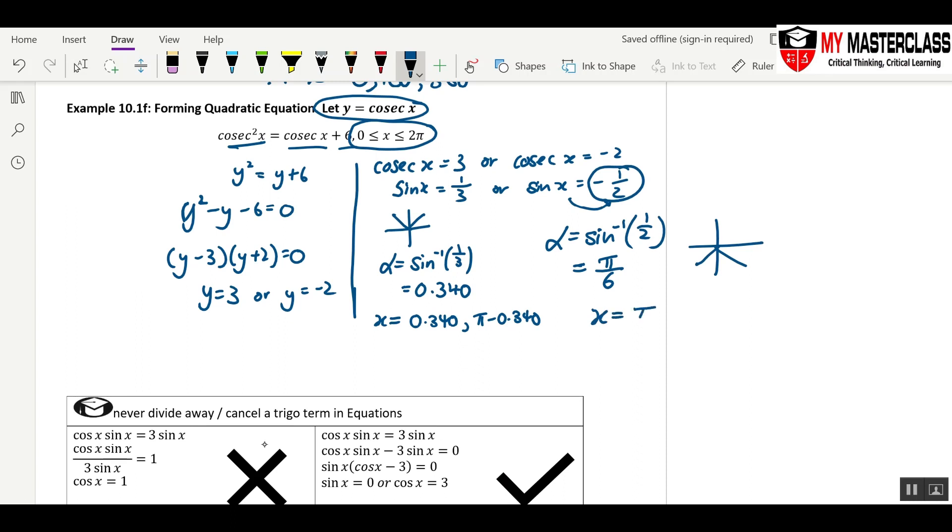X is equals to pi plus pi over 6, 2 pi minus pi over 6. And you will have 5 pi over 6, comma 11 pi over 6. Remember to evaluate this.